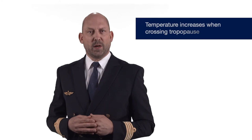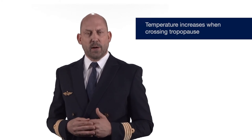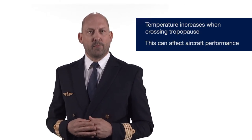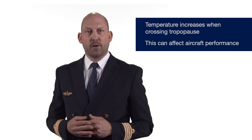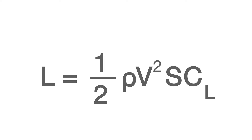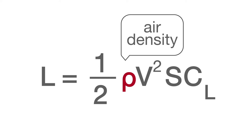On crossing the tropopause, the temperature will increase and this will have a detrimental effect on aircraft performance, thrust as well as lift. Ambient air pressure and temperature affect density. If we look at the lift equation, we can see the symbol for density, rho. As warm air is less dense, if all other parameters remain fixed, the lift will be reduced.